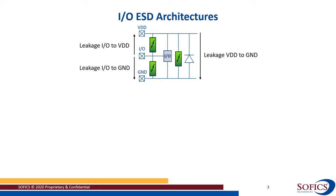If we look at an IO as represented here, you see three ESD clamps or diodes being placed. There are three leakage paths we have to take into account: IO to ground, IO versus VDD, and VDD to ground. Especially for the IO to VDD path, the arrow could be drawn in the other direction as well — we look at leakage as positive from the IO either to ground or to VDD.